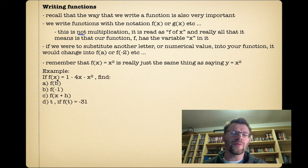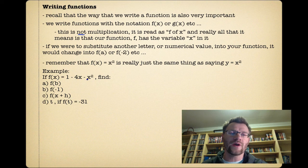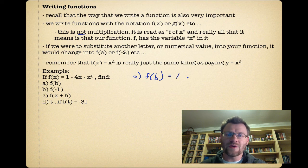Here's our example. If f(x) = 1 - 4x - x², find f(b). Well, f(b) just means normally it's f(x), so instead of x we're going to put in a b. So that just ends up being 1 - 4b - b². So not too hard.